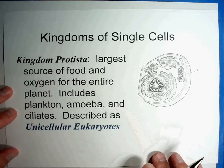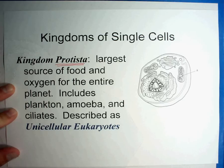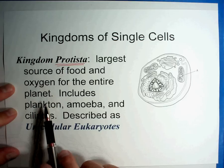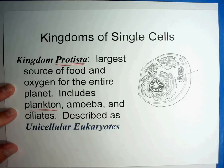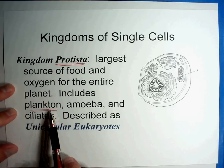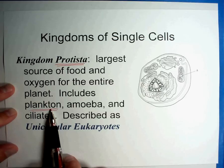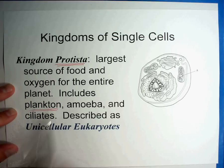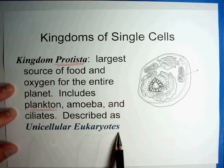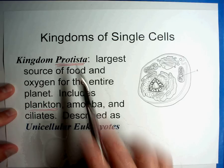Now we start getting into the more complex kingdoms. In kingdom Protista, they are the largest source of food and oxygen for the entire planet. These include things like plankton. Most of the photosynthesis on Earth takes place with plankton — they sit on top of the ocean, absorb sunlight, and are a huge producer of oxygen. That's why contaminating the oceans would be a major problem. Protists are described as eukaryotes — they have an organized cell.